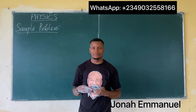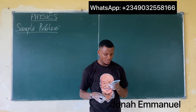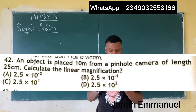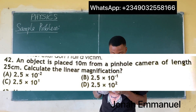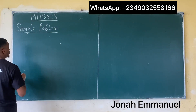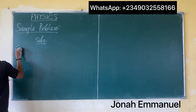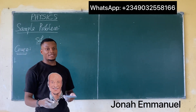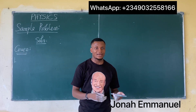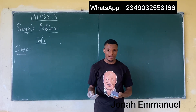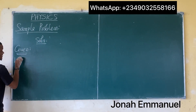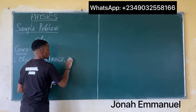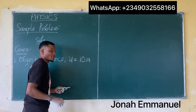Let's take some sample problems and work them out. The first one says an object is placed 10 meters from a pinhole camera of length 5 cm. Calculate the linear magnification. My first task is to list the given parameters. An object is placed 10 meters away, so the object distance u is equal to 10 meters.